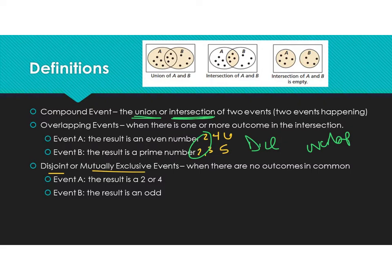Our disjoint example using dice: a result of a 2 or a 4, versus a result of an odd — 1, 3, or 5 — and they have nothing in common. So that is called disjoint or mutually exclusive.